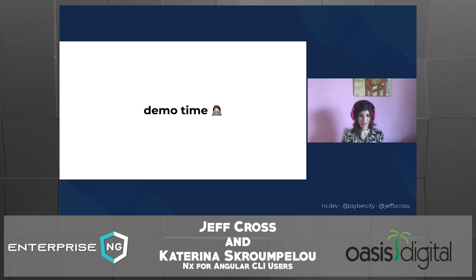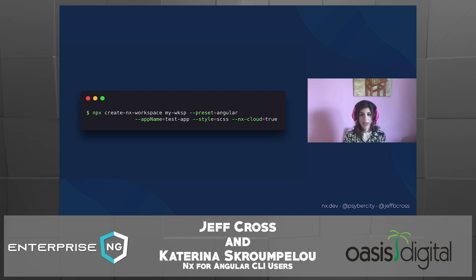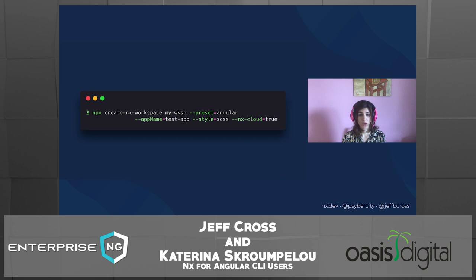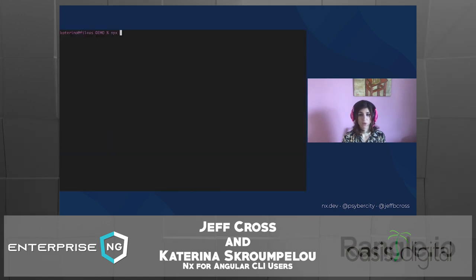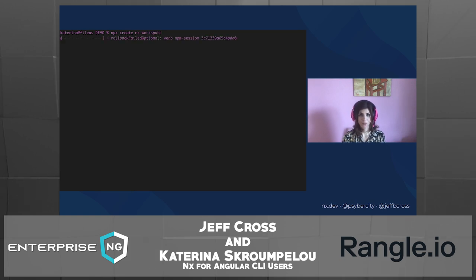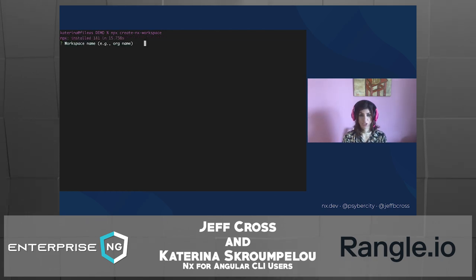Now it's demo time. Let's see the command to create an NX workspace. It's npx create-nx-workspace, and then the name of the workspace. You can add some flags to pre-fill some of the options, but you can also run just npx create-nx-workspace and an interactive wizard will show up in your console. Let's go to the console and type npx create-nx-workspace and see what will happen. First of all, it asks us to give a workspace name — so let's give the name 'my-workspace'.